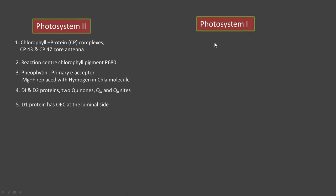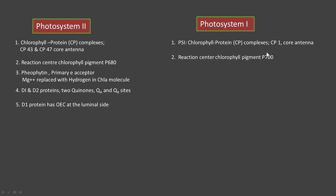Photosystem 1 components include CP1, and reaction center P700, which receives light of 700 nm. The first electron acceptor A0 is a chlorophyll a-like molecule. Next is A1, a quinone, followed by FeS protein which includes FeS-X, FeS-A, and FeS-B iron-sulfur centers.